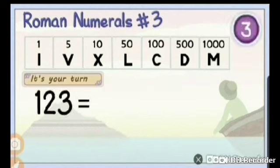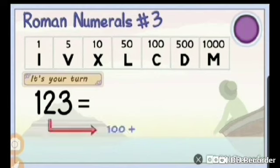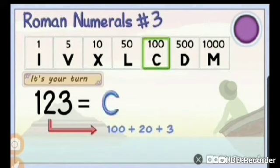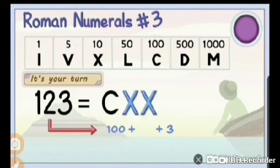123 can be written as 100 plus 20 plus 3. 100 is C. 20 is 2 times X. And 3 is 3 times I.